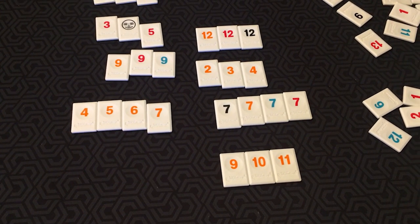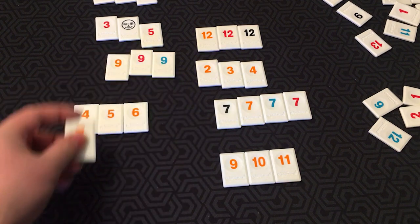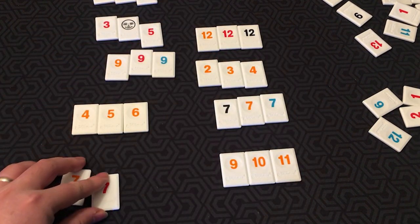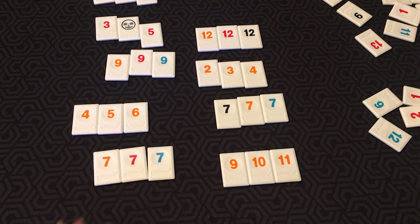Another move I could do is a combined split where I basically take the 7 from this run, a 7 from this run, and 1 from my hand, and make a set of 7s.